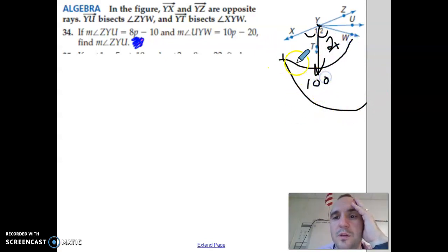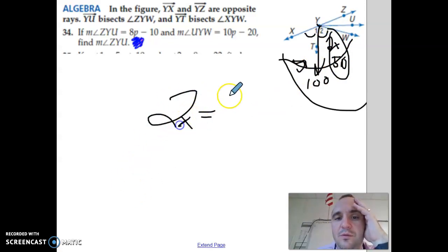so that would mean this is 50, this is 50. But if they ask you to solve for X, you have to take this information and make your own equation. 2X equals 50. X equals 25.